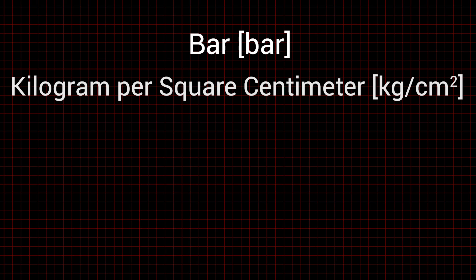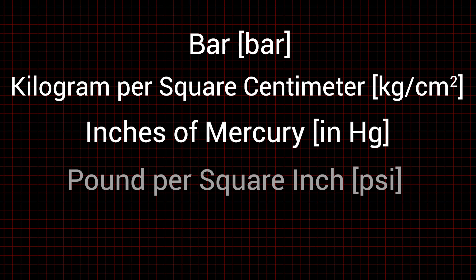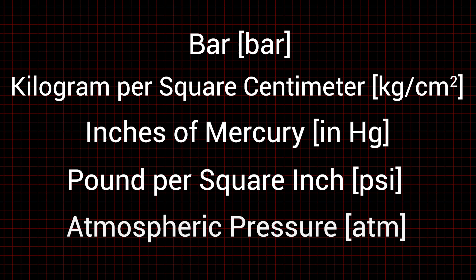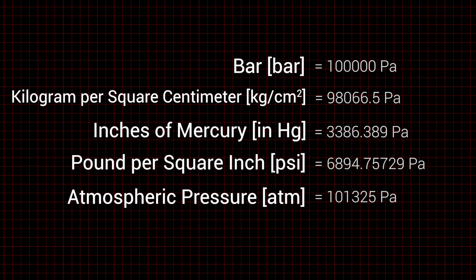Bar, kilogram per square centimeter, inches of mercury, pound per square inch, and atmospheric pressure are just a few in use today, or in the distant past. As you can imagine, each has its own conversion formula to jump from one unit to another.